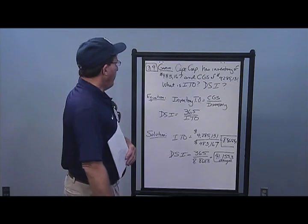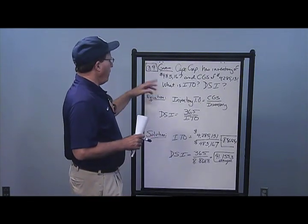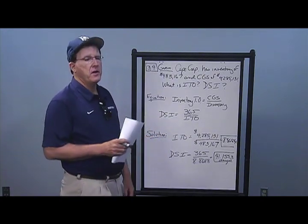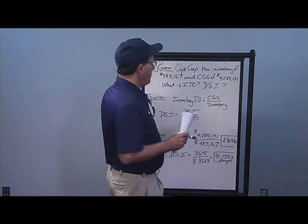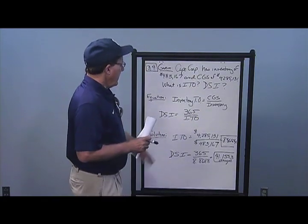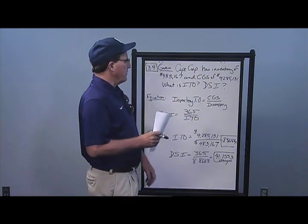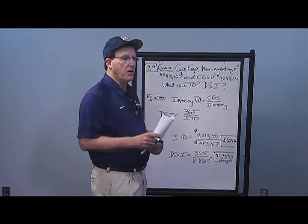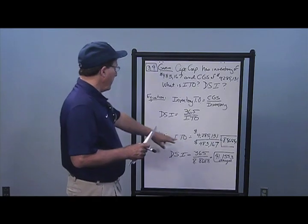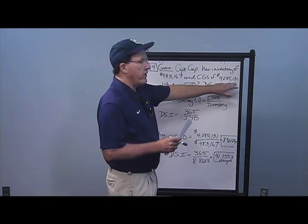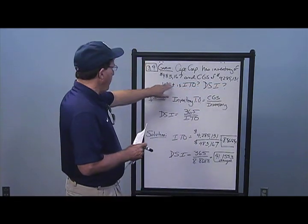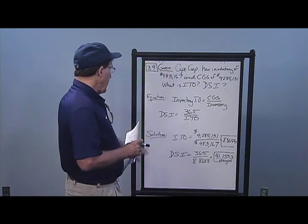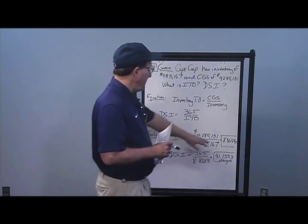In Problem 4, Cape Corp has inventory of $483,167 and cost of goods sold of $4,285,131. What are their inventory turnover and days sales in inventory? Inventory turnover is cost of goods sold over inventory. I take $4,285,131 divided by $483,167 and get a solution of 8.8688 times — the inventory turns over 8.8688 times per year.